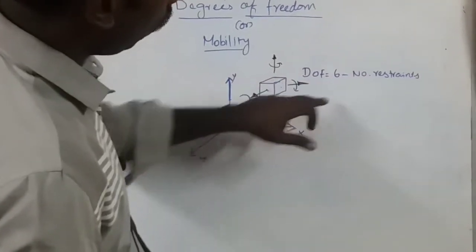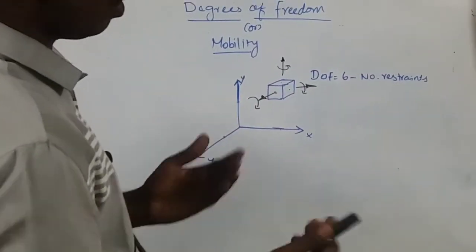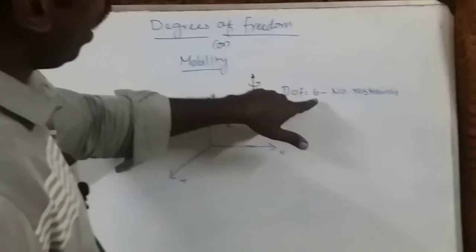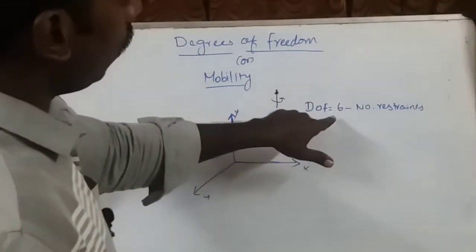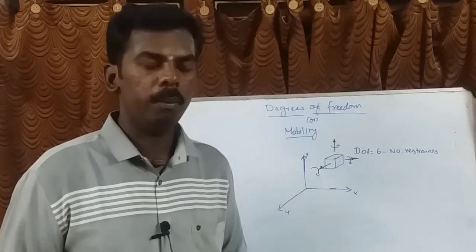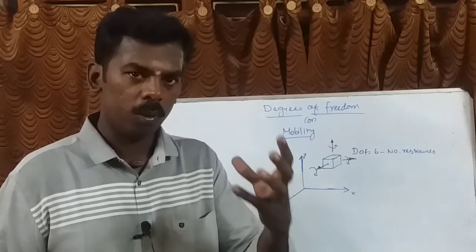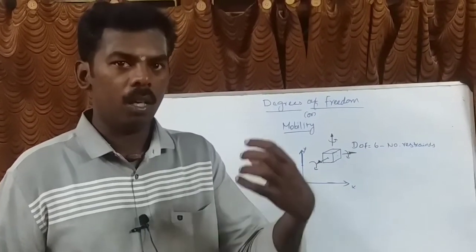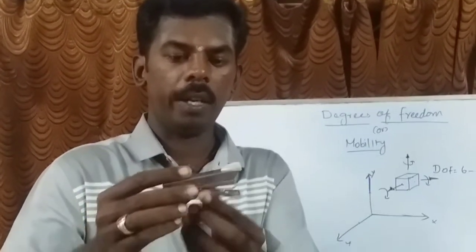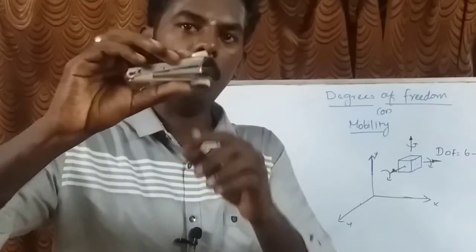Degrees of freedom equals six minus the number of restraints. A normal mechanism has one link fixed to the ground. Mobility and degrees of freedom are the same thing — mobility means the number of inputs required to run the mechanism. For example, a stapler requires a single input, so mobility F equals one.